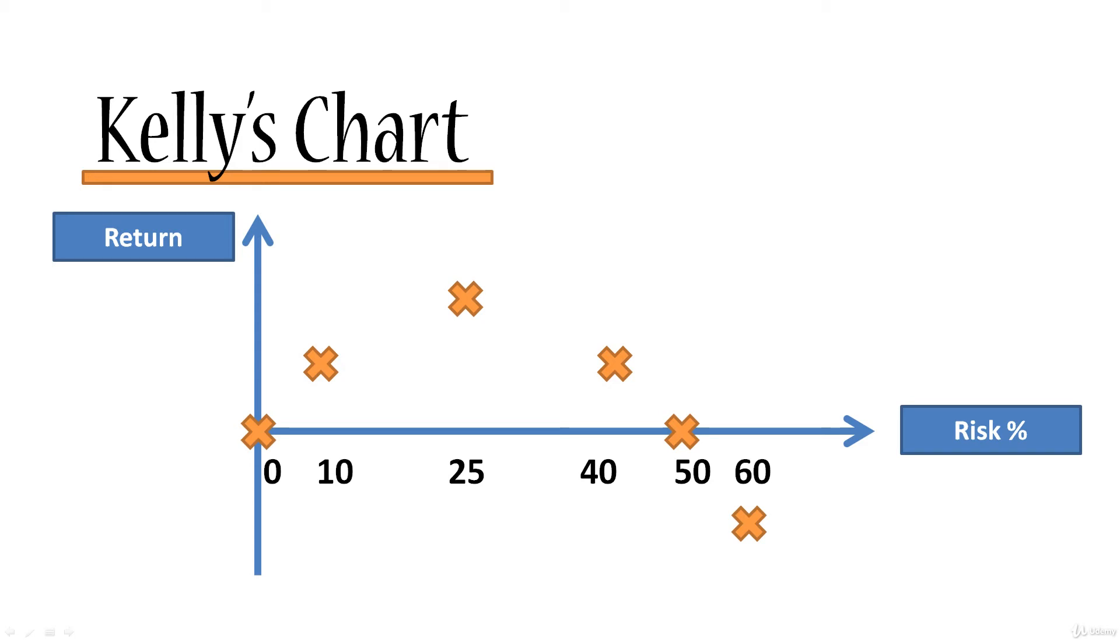If we bet 75%, our return drops even further. And it doesn't stop there. We can bet 80%, 90%, all the way up to 100%. The return will just keep dropping.